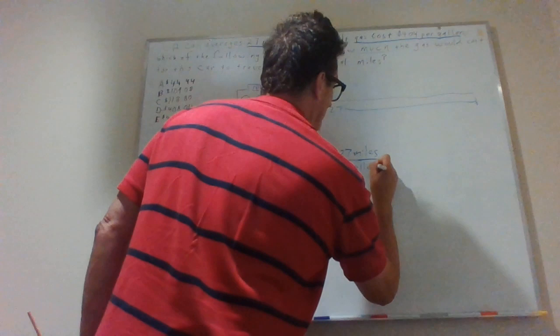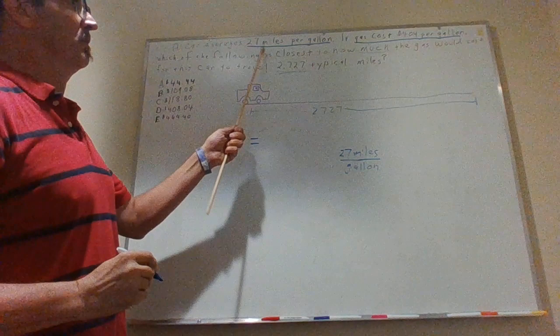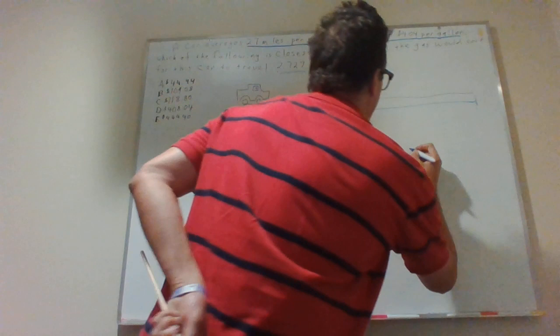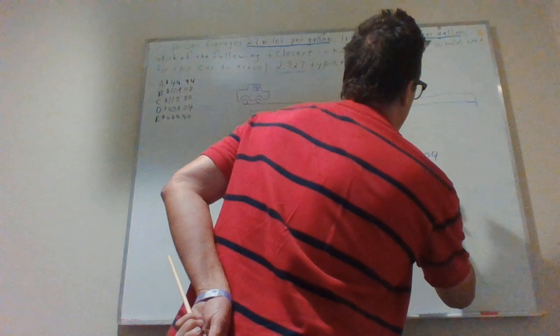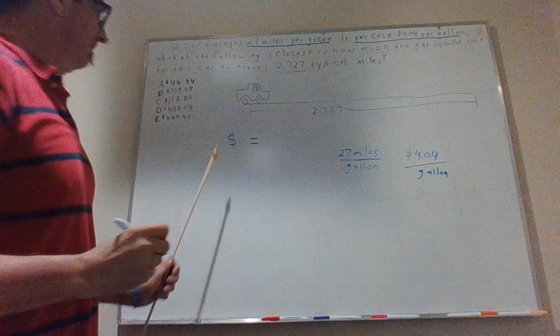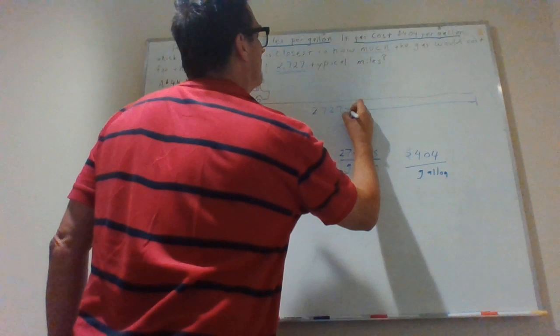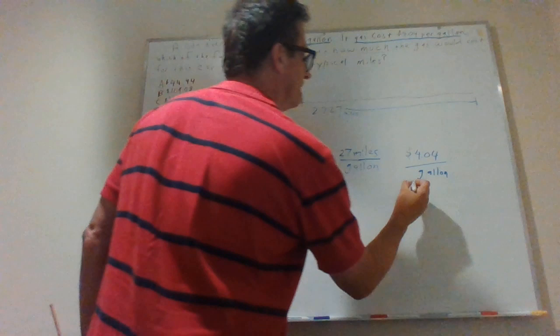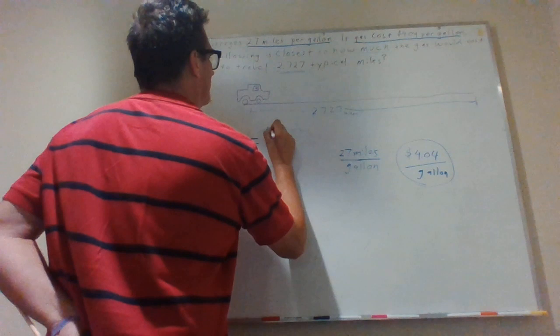27 miles per gallon. Now we can plug that into an equation. It costs $4.04 per gallon. Dollars is a unit, just like miles is a unit, just like gallons is a unit. So we have $4.04 per gallon. We have dollars here. This is miles. So we have to figure, somehow we have to get dollars to come up over here. So I'm going to take this quantity right here. I'm going to plug it right here. Why? You're probably asking why is he doing that?